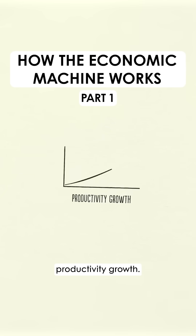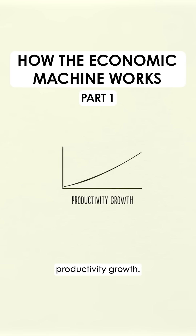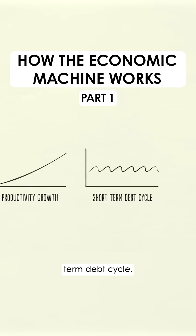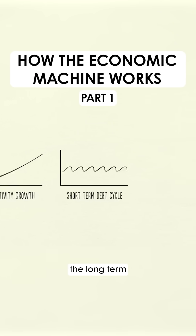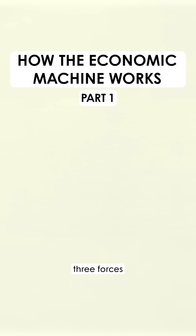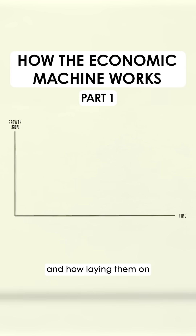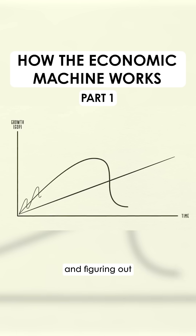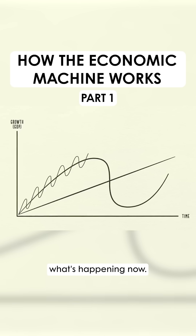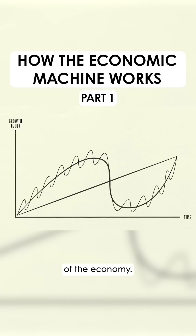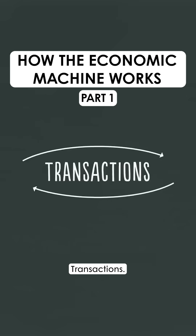Number one: productivity growth. Number two: the short-term debt cycle. And number three: the long-term debt cycle. We'll look at these three forces and how laying them on top of each other creates a good template for tracking economic movements and figuring out what's happening now. Let's start with the simplest part of the economy: transactions.